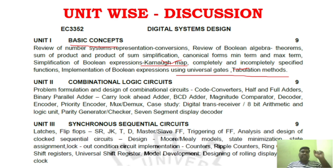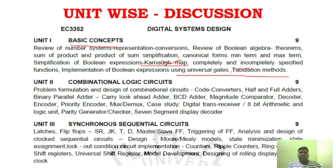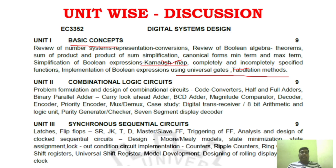In Unit 2, you need to concentrate on a maximum of 6 to 7 areas so that you can attend all the questions. Unit 2 carries direct marks — around 13 marks — and the split-up can be 8 marks and 5 marks. Unit 2 is a very, very important unit for your Digital System Design exam.